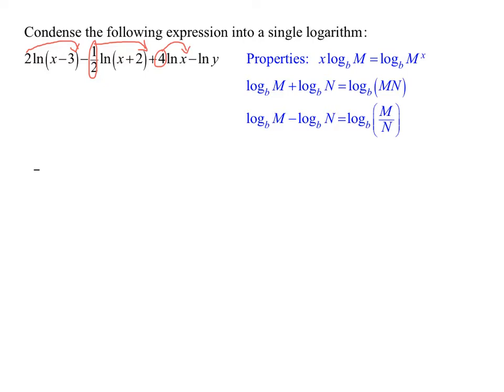So it gives me ln(x-3) to the second power, minus—I want to leave the negative there—ln(x+2), and I brought the one half up as an exponent, raised to the one half power, plus ln(x) to the fourth power, minus ln(y).